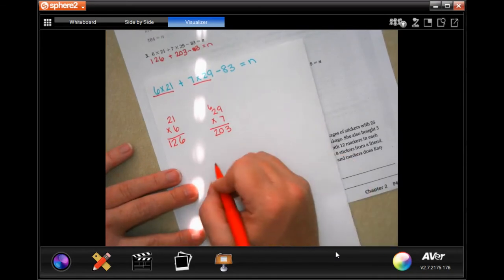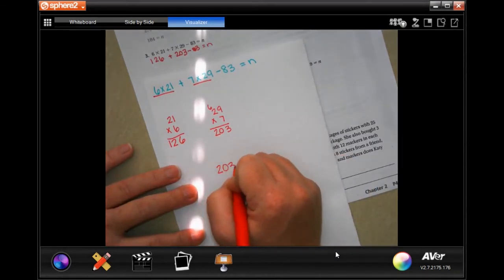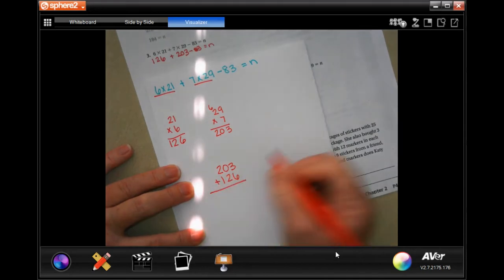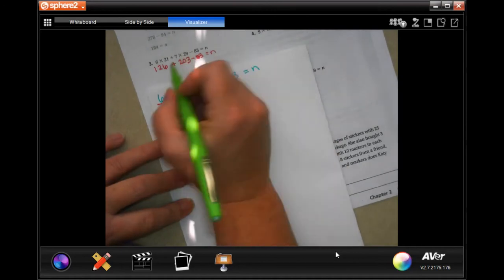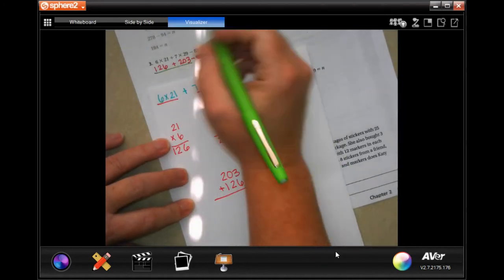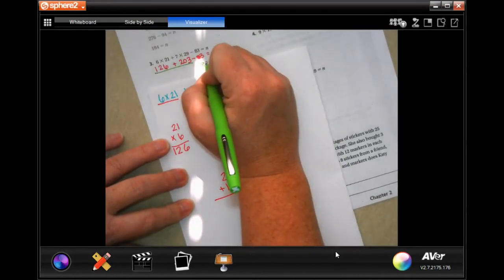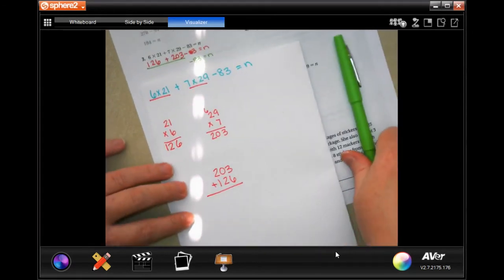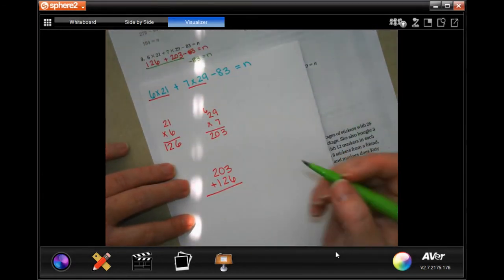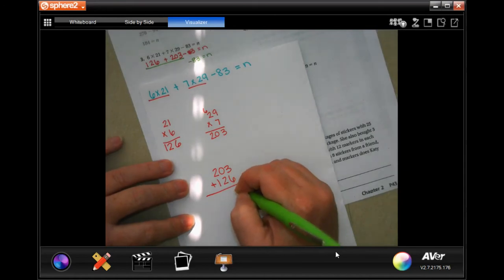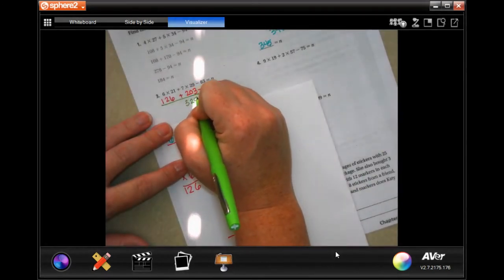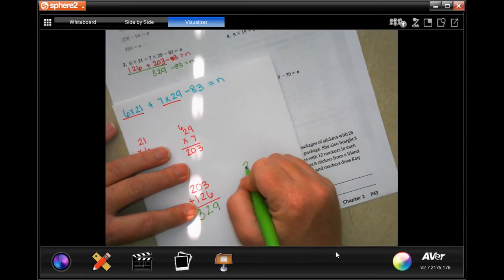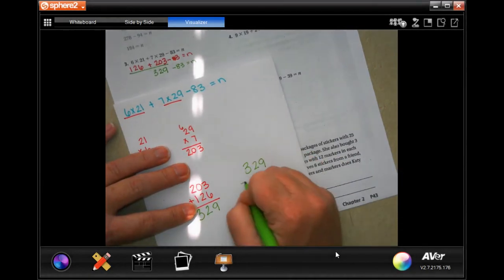Now I have 203 and 113, 226 and I have to add those together. So now I'm going to take care of this part and still have minus 83 equals n. So 3 plus 6, 9, 0 plus 2, 2, 2 plus 1, 3. So 329.